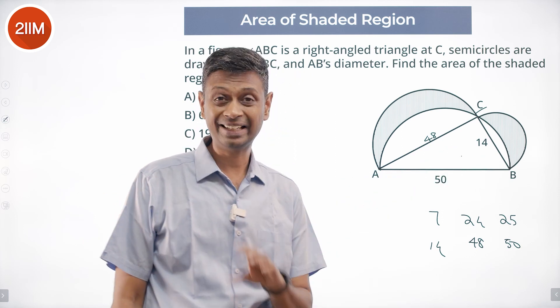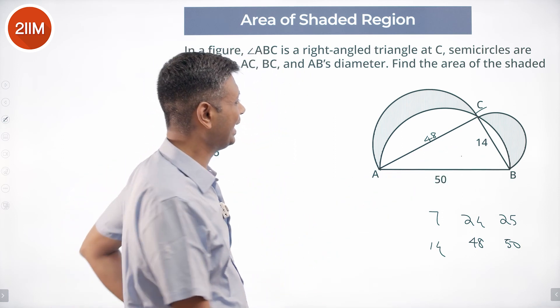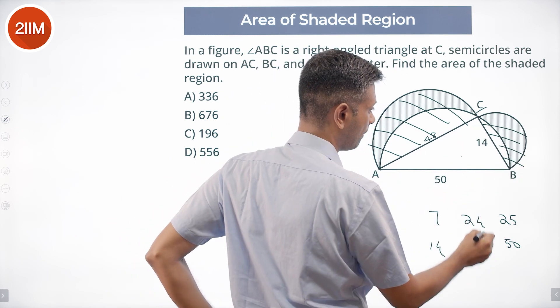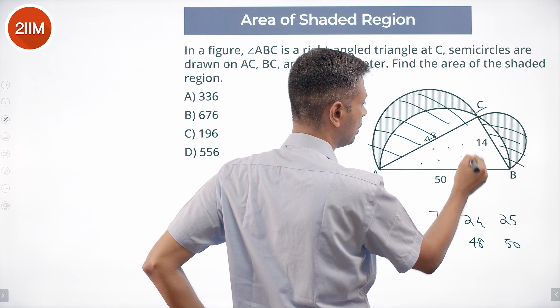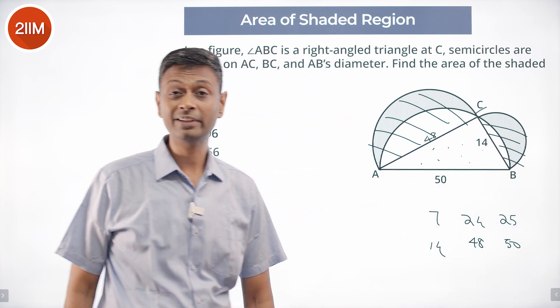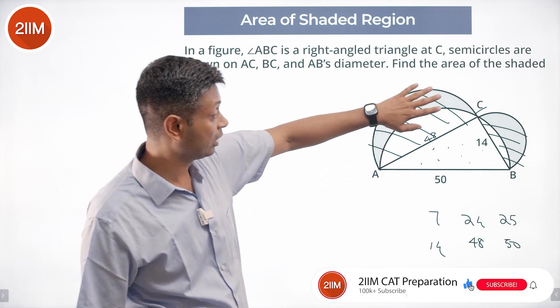So what do we do? Area of this semicircle plus area of this semicircle plus area of the triangle minus area of this semicircle. Find the total area of this whole shape: semicircle plus semicircle plus triangle.